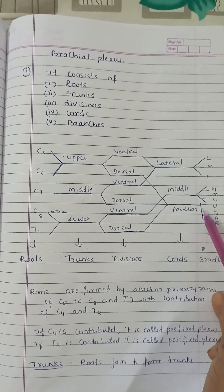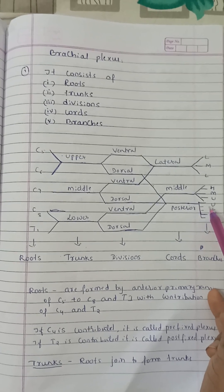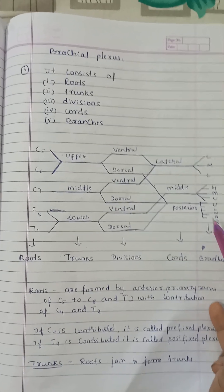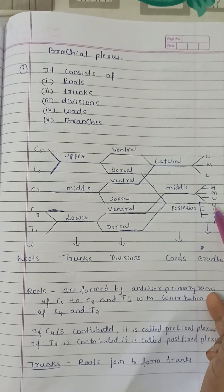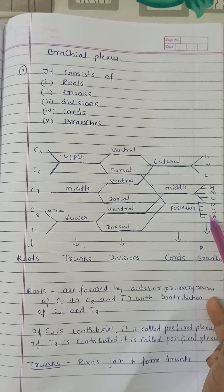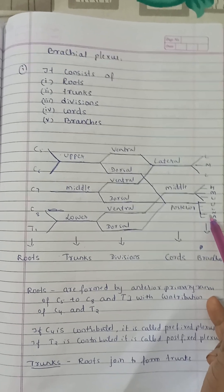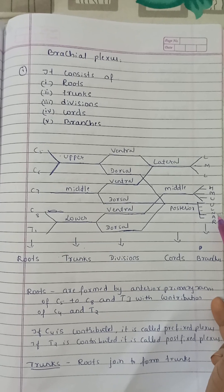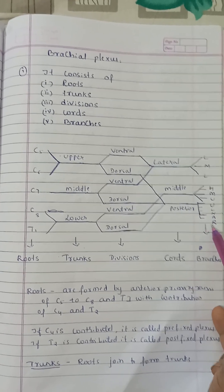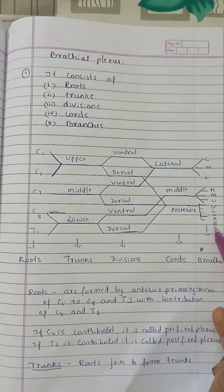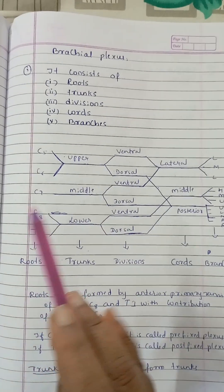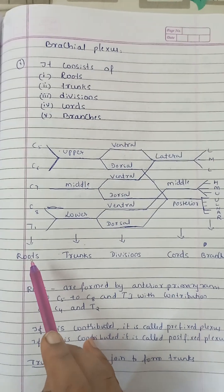The posterior cord gives rise to five nerves. The mnemonic is ULNER: U for upper subscapular nerve, L for lower subscapular nerve, N for nerve to latissimus dorsi, E for axillary nerve, and R for radial nerve. That is the brachial plexus.